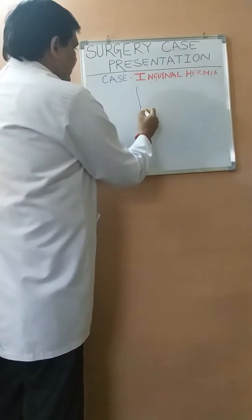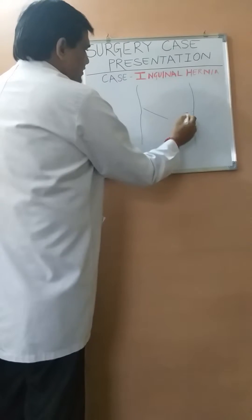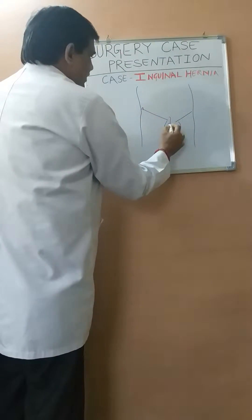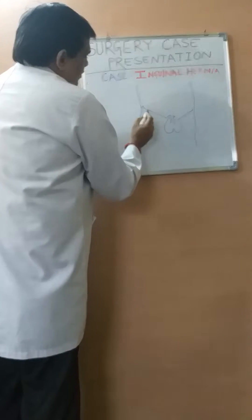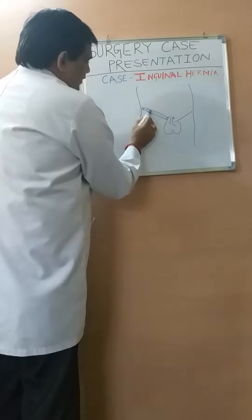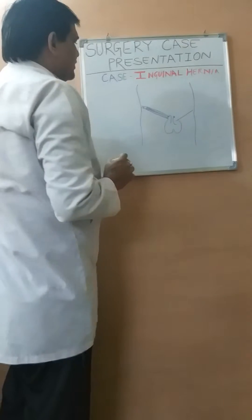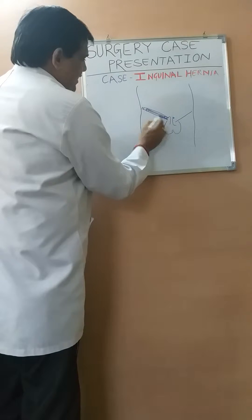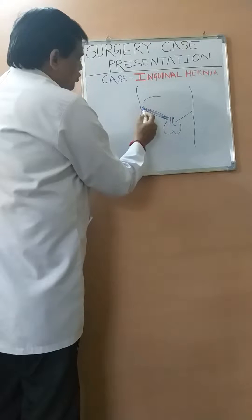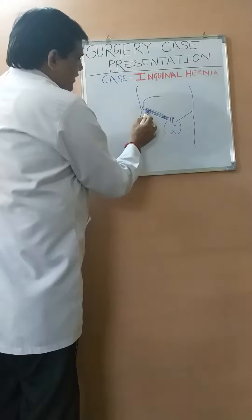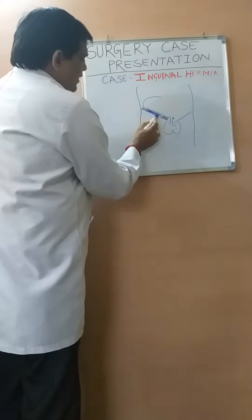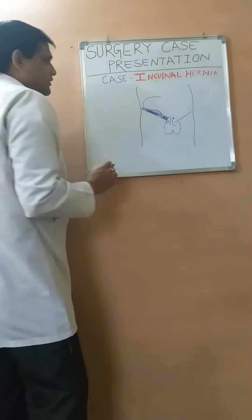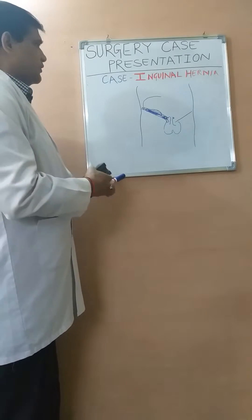In inguinal hernia, this is the abdominal cavity and this is the inguinal region. This is the anterior superior iliac spine and we have the pubic symphysis and pubic tubercle. This region is the inguinal canal; this is the floor of the inguinal canal. Here is the defect in the transversalis fascia — this is the deep inguinal ring. Here we have the superficial inguinal ring, and Hesselbach's triangle is over here. Content can come out through the deep inguinal ring forming indirect inguinal hernia, or due to weakness of the floor it can protrude through Hesselbach's triangle as a direct inguinal hernia.